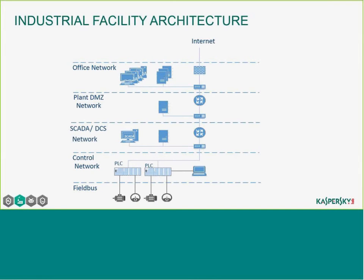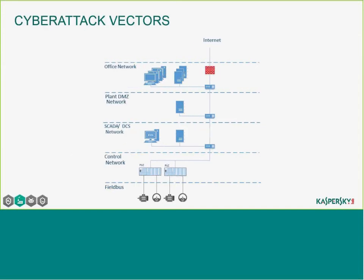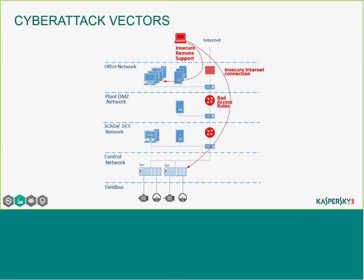Here we have an example of an Industrial Facility Architecture. All companies have segmented networks: an Office Network, a Plant DMZ Network, a SCADA Network, a Control Network, and field buses. How can cybercriminals get into your plant and launch a cyberattack? The first point is the Internet port — the Office Network needs to work with the Internet for ERP, SIS, or other systems. That first Internet connection is the first entry point. With insecure Internet connections, you can have bad access rules on your firewalls, from the Plant DMZ Network to the SCADA and others. Another point is insecure remote support.